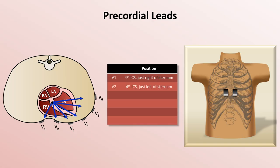Electrode V2 should be placed in the fourth intercostal space, just to the left of the sternum. V4 goes in the fifth intercostal space in the mid-clavicular line.